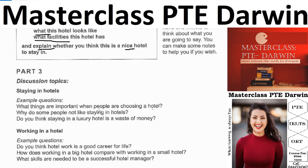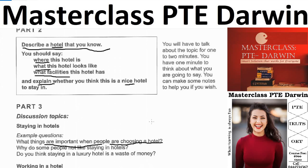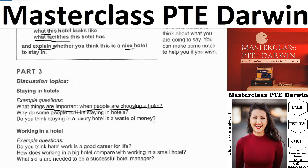The first follow-up question is: 'What things are important when people are choosing a hotel?' You need to construct at least three to five sentences. A sample answer: 'Most of the time people choose a hotel by observing the location — a convenient location is the most important part. Another thing people consider is the price and services, which should match. If the price is too high and the services are not good, that's no good.'